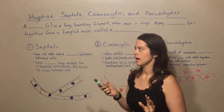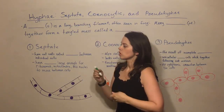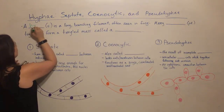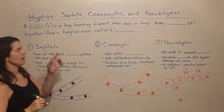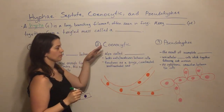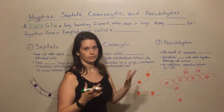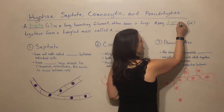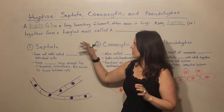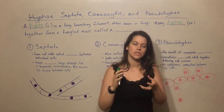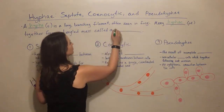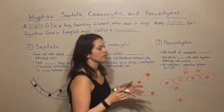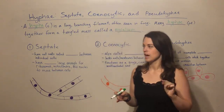So first let's talk about what hyphae are. The singular term is a hypha — it's a long branching filament that we see in fungi. When you get many hyphae together, they form a tangled mass that we call a mycelium. Now that we've established some of that vocabulary, let's start looking at our three different kinds of hyphae.